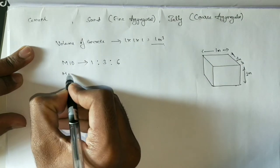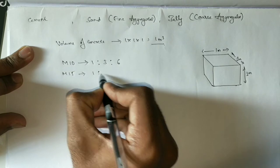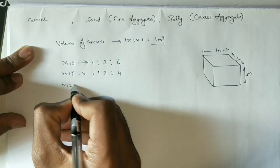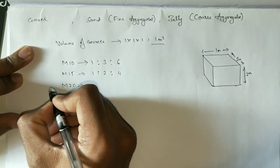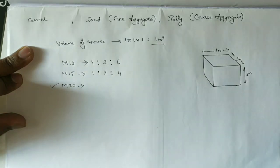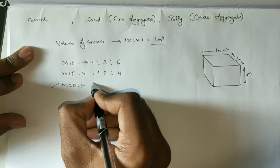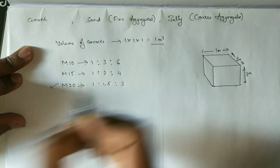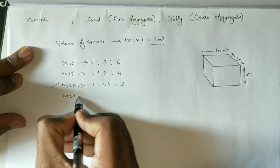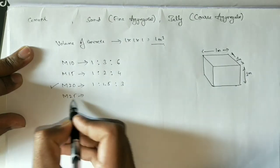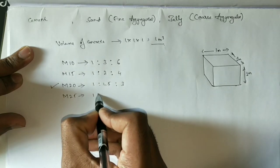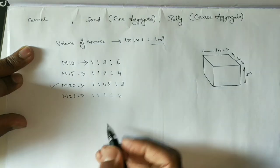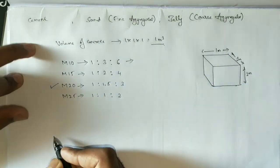M20 grade, which is most preferably used in structures, is 1:1.5:3. And M25, which is almost a rich mix, is 1:1:2.